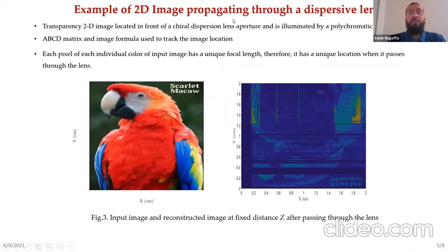This is an example of 2D image propagation across the dispersive lens. This is the input image and this is the reconstructed image after passing through the dispersive lens. Each pixel in the individual color of the input will have a unique focal length, therefore a unique location.